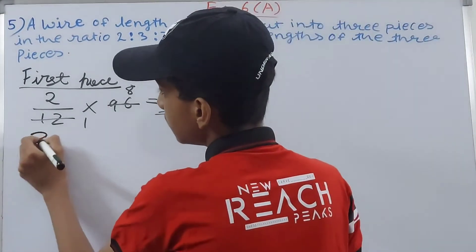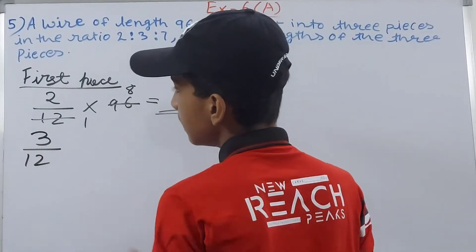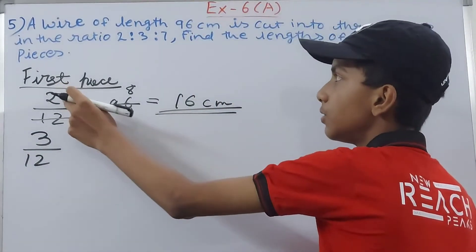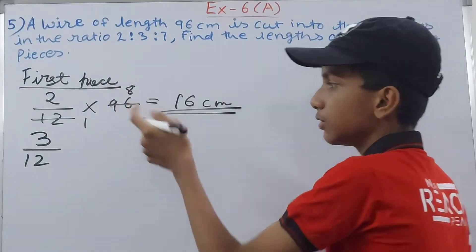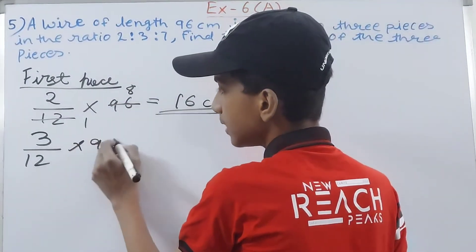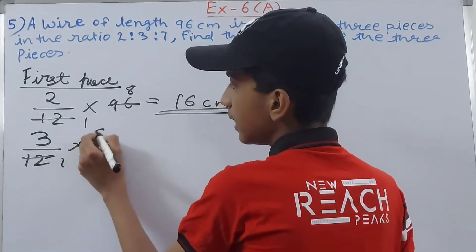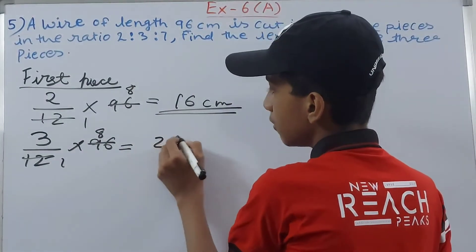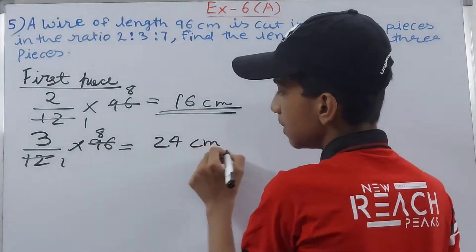Then we have 3. So 3 upon 12, nothing we have to change, just replace this 2 with this 3. So 3 upon 12 into 96. 1 and 8, so 8 times 3 is 24 centimeters again here as well.